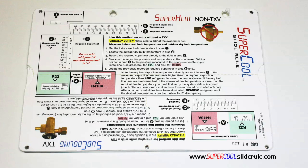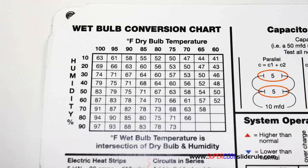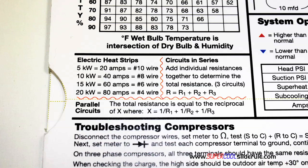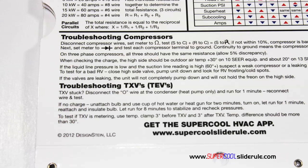This one tool will allow you to charge a system with R22 or R410A in either the super heat or sub cooling method. The back cover contains required formulas, capacitor rules and practices, a wet bulb conversion chart, how to perform computations on series or parallel circuits, an electric heat strip guide, and a complete system troubleshooting diagnostic chart.